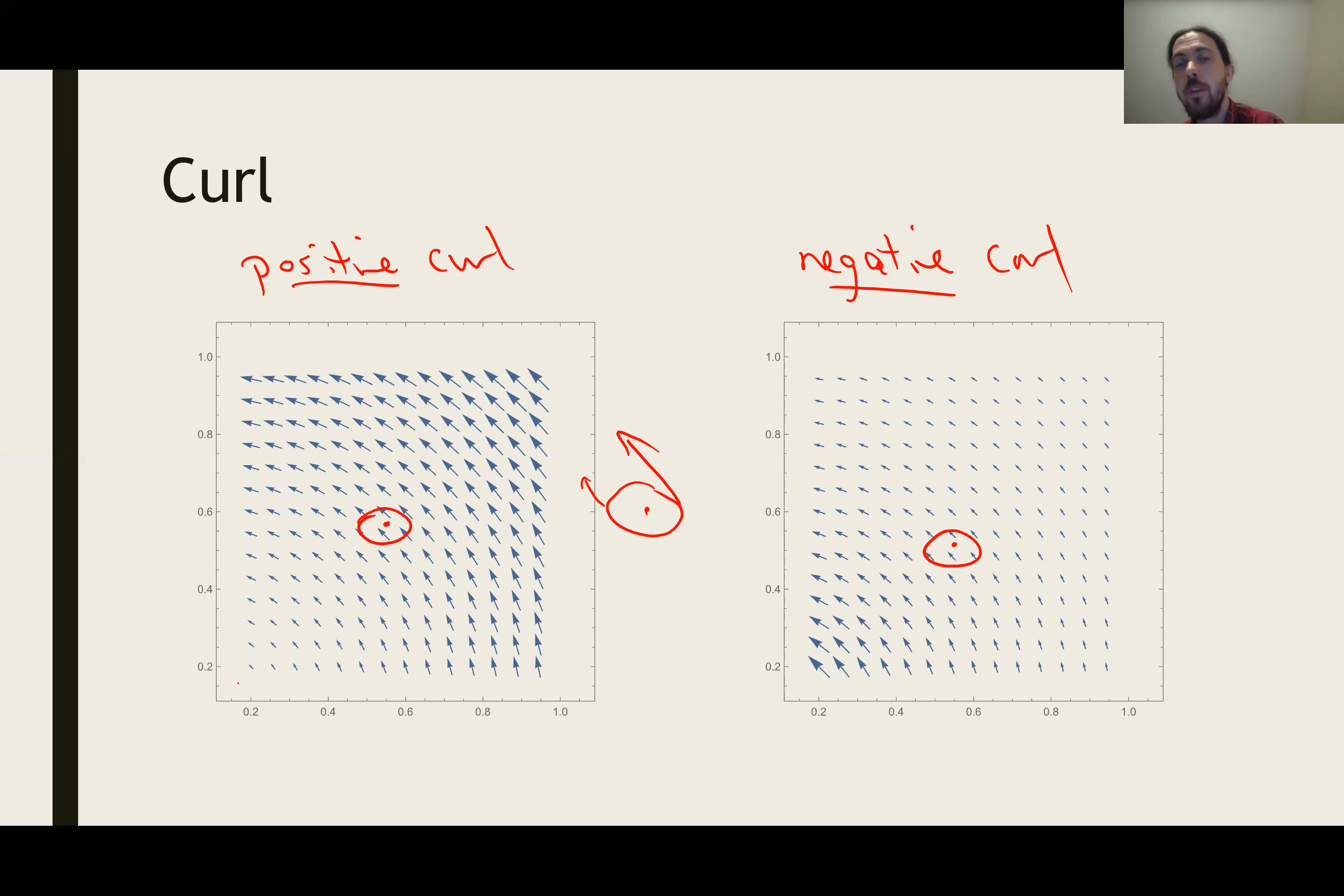For this other one, instead, the vectors close to the origin are actually stronger than the ones far away. And so if we're stuck at this position in the vector field, the forces are opposite.